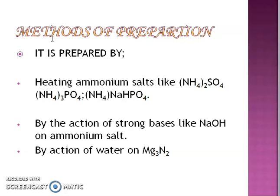Ammonia can be prepared by many methods. The first method is heating ammonium salt. If you heat any ammonium salt with NaOH, then ammonia gas will be produced. This is a good example when we use salt analysis.